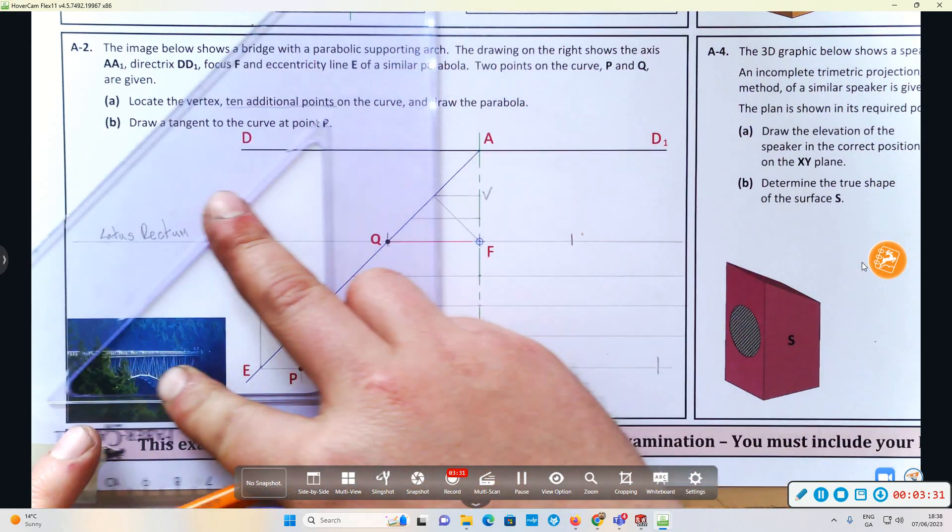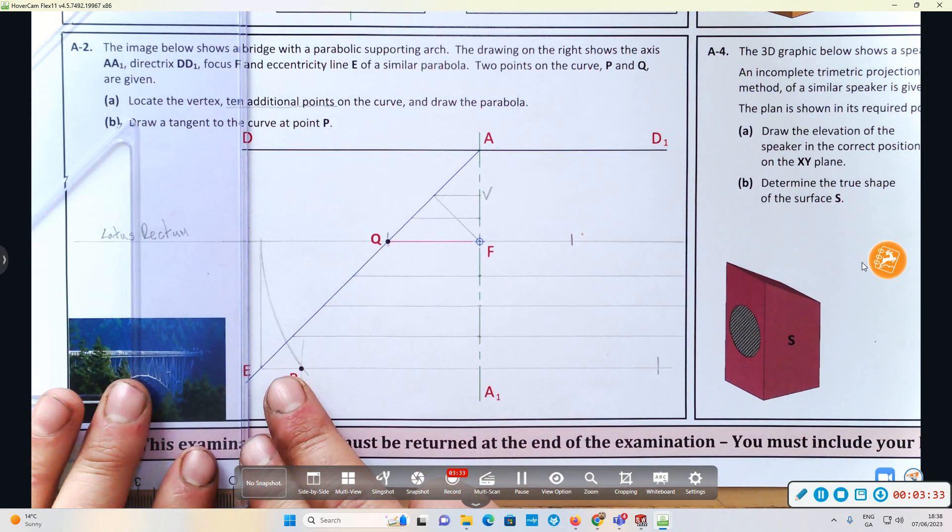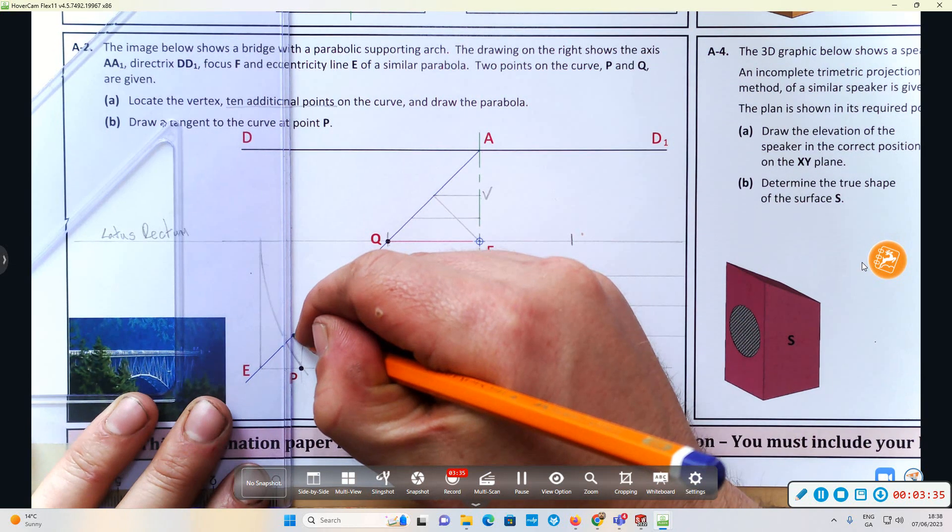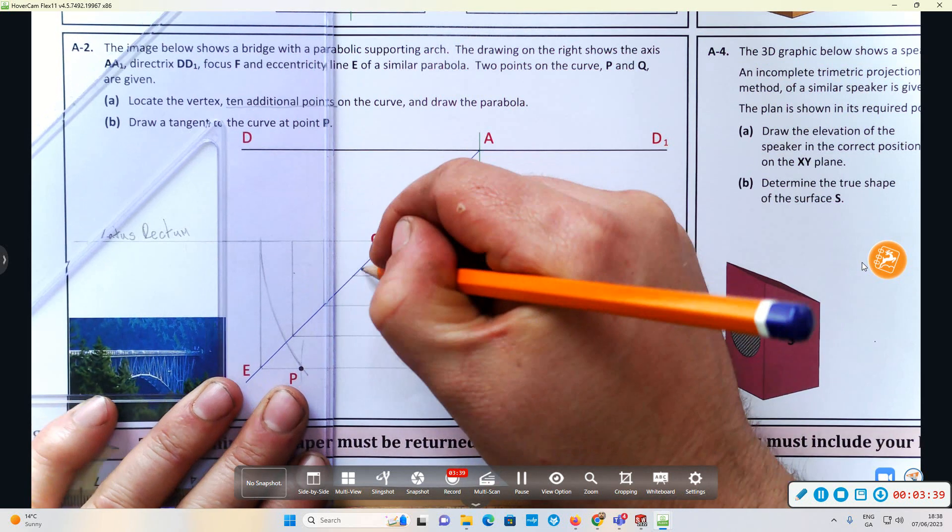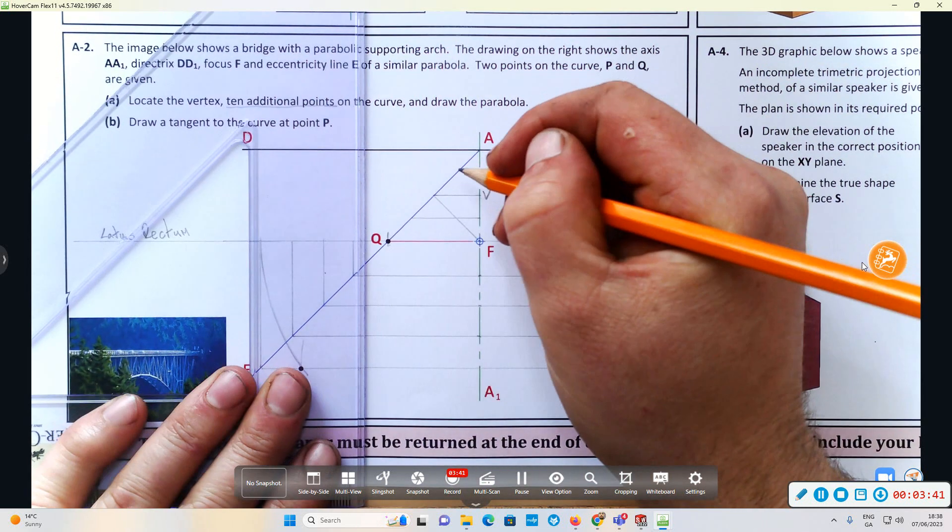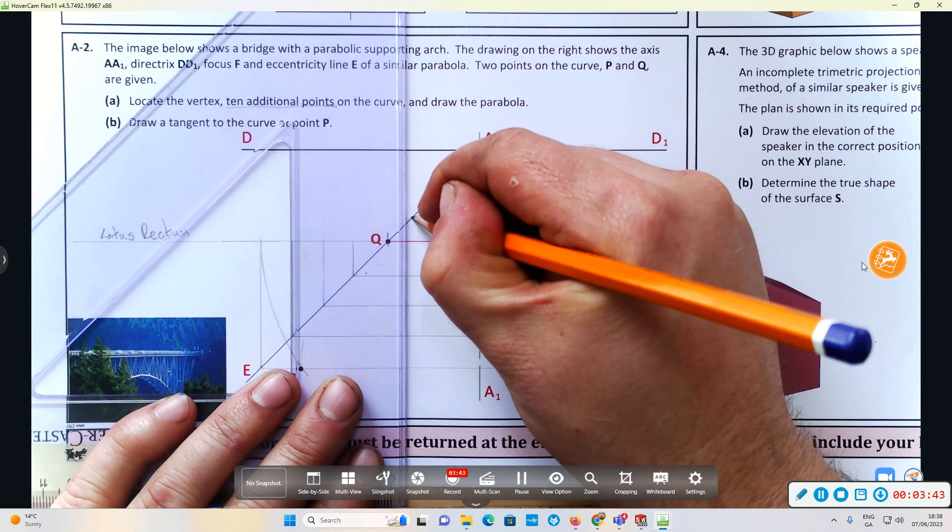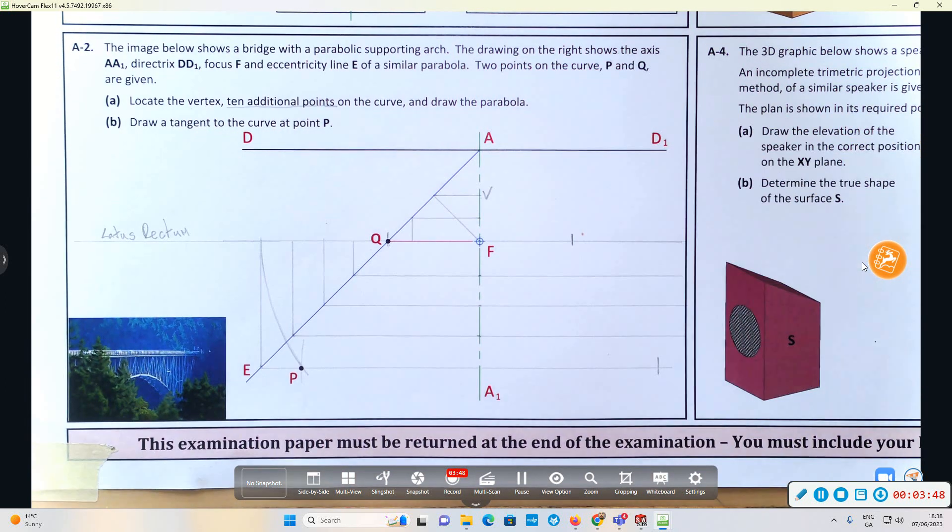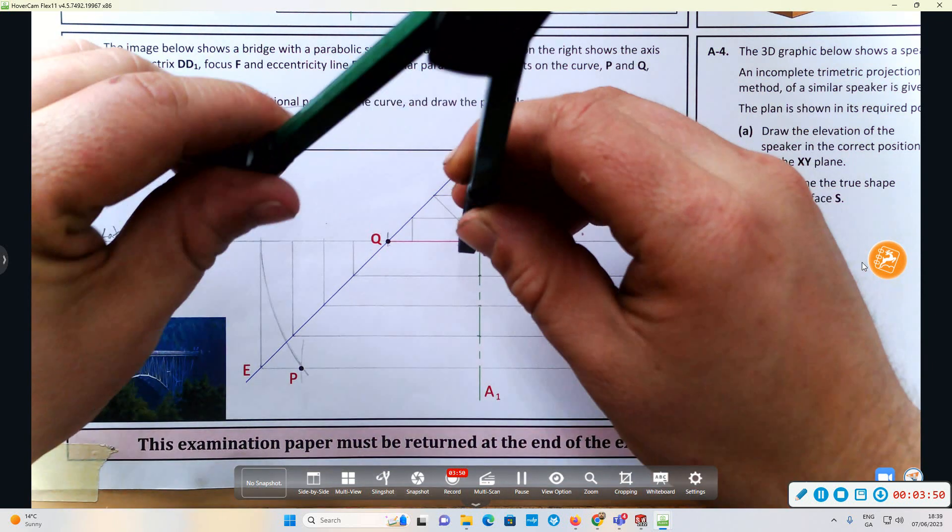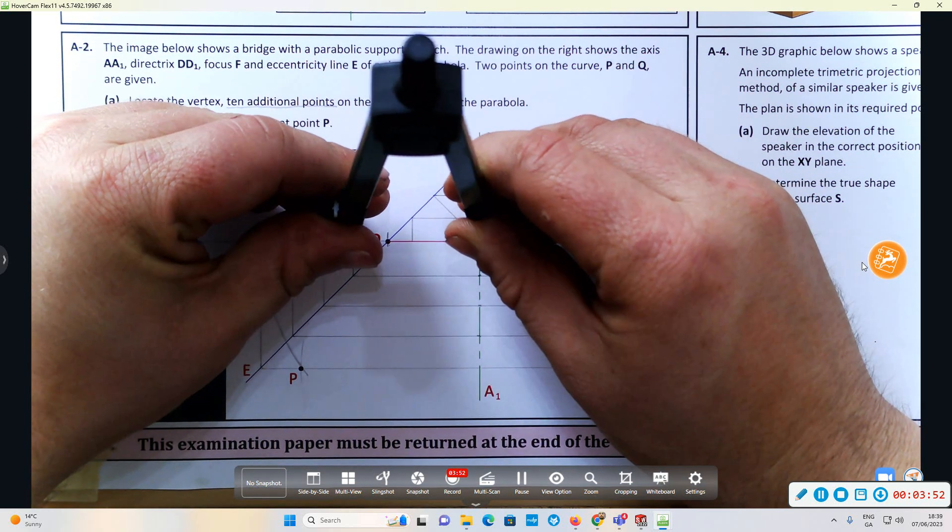Once they hit the line of eccentricity, we're going to bring them parallel to the major axis AA1 until they hit our latus rectum. Then I'm going to do the same from the point in between V and S.